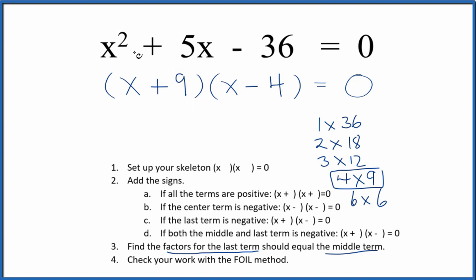And we've correctly factored the equation x squared plus 5x minus 36, but we should check our work with the FOIL method just to make sure we got it right.